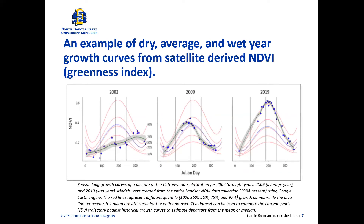We can also look at historic data from satellite — we have satellite data going back to 1984 from the Landsat satellite. In this figure, data comes from the Cottonwood Station in South Dakota, and the curves represent the different quantiles of growth curves, with the blue line as the average for all years. I've highlighted three different years: 2002 was a drought, 2009 was a normal year, and 2019 was exceptionally wet. The Normalized Difference Vegetation Index is basically a greenness index, and you can see that in 2002 the trajectory was quite flat compared to the steeper curves in 2009 and steeper yet in 2019.